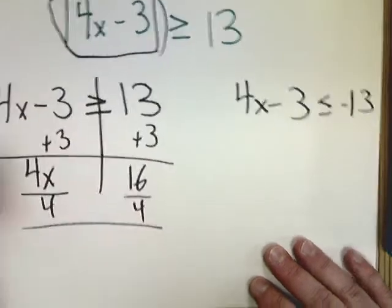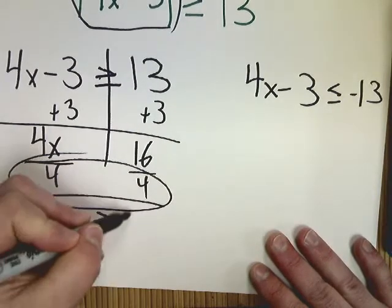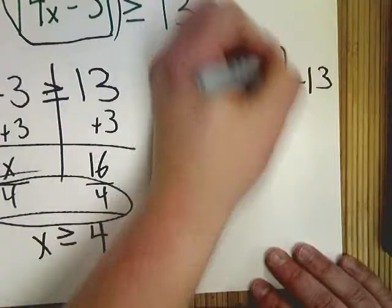Divide by 4. Since I'm dividing by a positive, I don't need to flip this over. And I get x is greater than 4 over here.